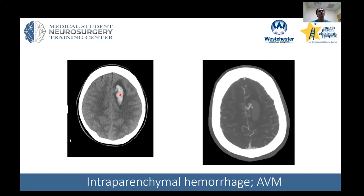This was the case of a 21-year-old who came in with a very severe headache. In kids, usually they don't have hypertension and their blood vessels are relatively healthy. So anytime you have a pediatric patient with an intraparenchymal hemorrhage, you should always think about a vascular malformation.